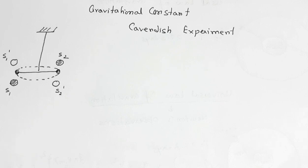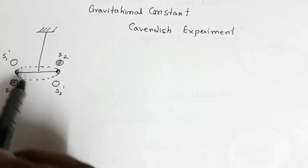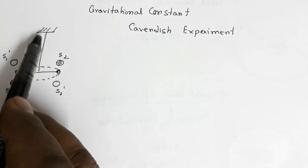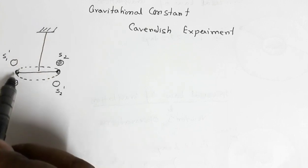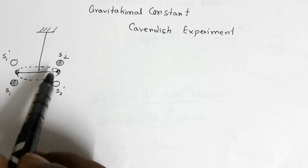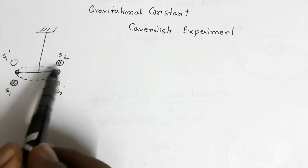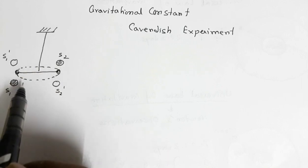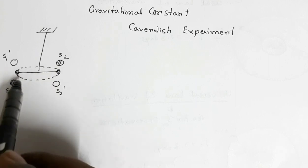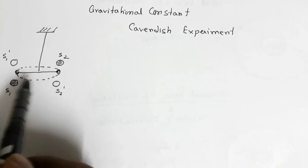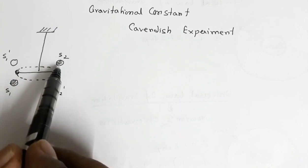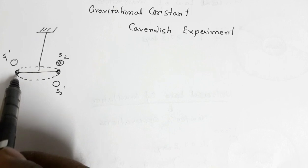The next part of the video is the determination of the gravitational constant G by the Cavendish experiment. Cavendish performed an experiment to obtain the value of the gravitational constant. He took a rod suspended from a support, with two small lead spheres attached at the two ends. A pair of large lead spheres — much bigger than the small ones — were then brought near the two small spheres from opposite directions.